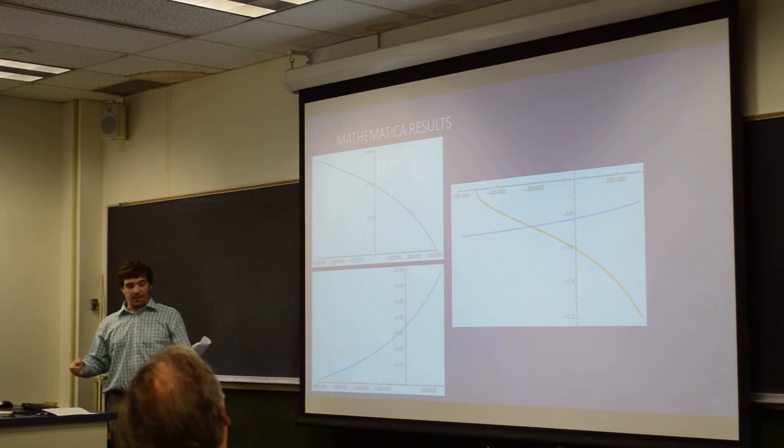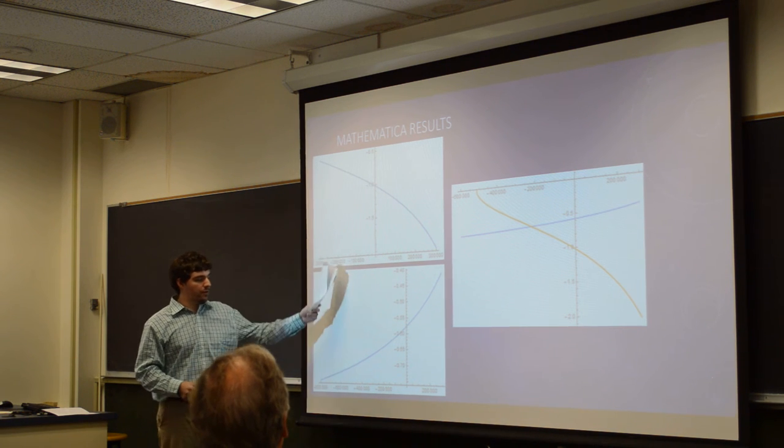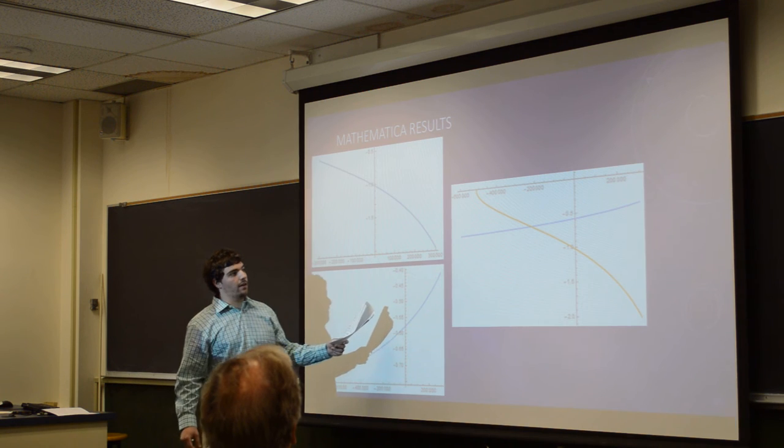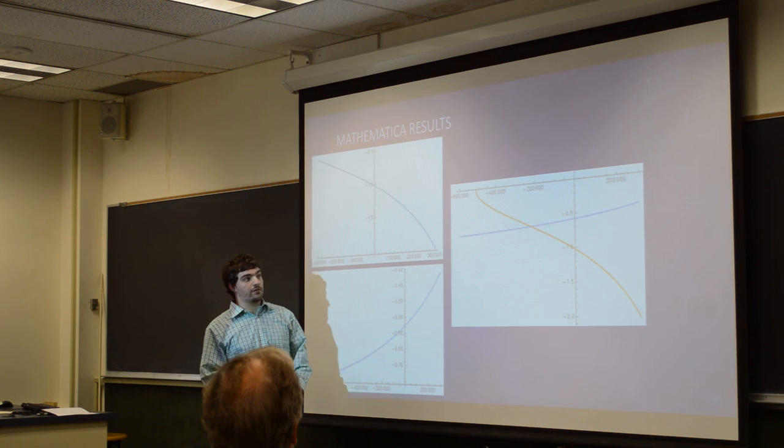So I just plotted some basic things in Mathematica of both of these functions, the ratios that we got and where they intersect each other, which is obviously a negative energy value and it doesn't make much sense.